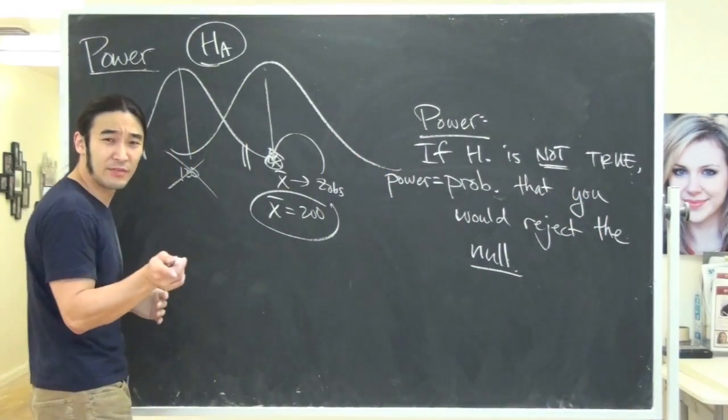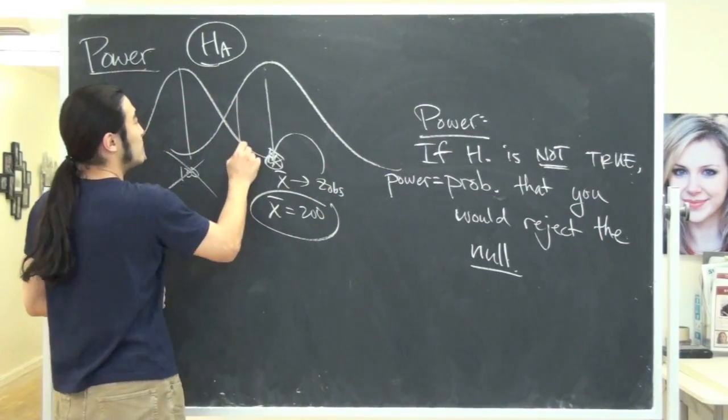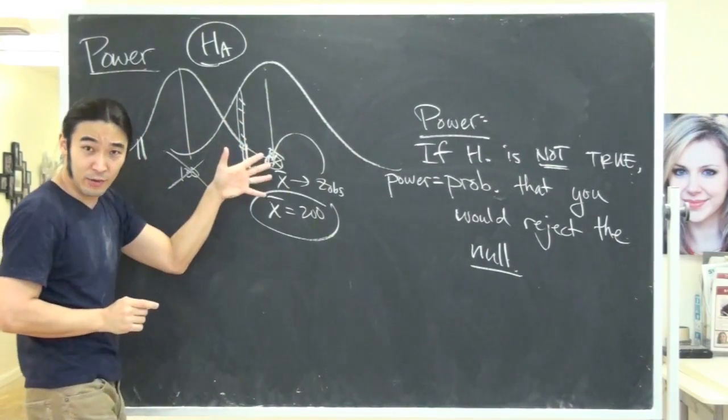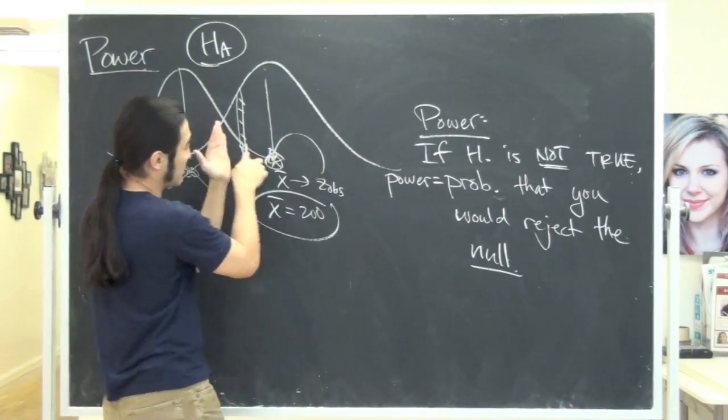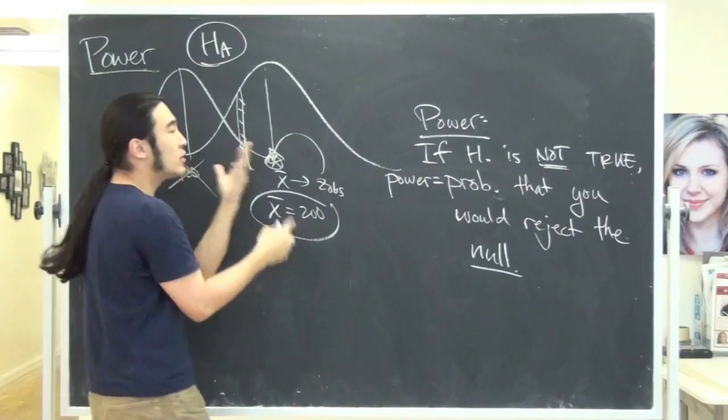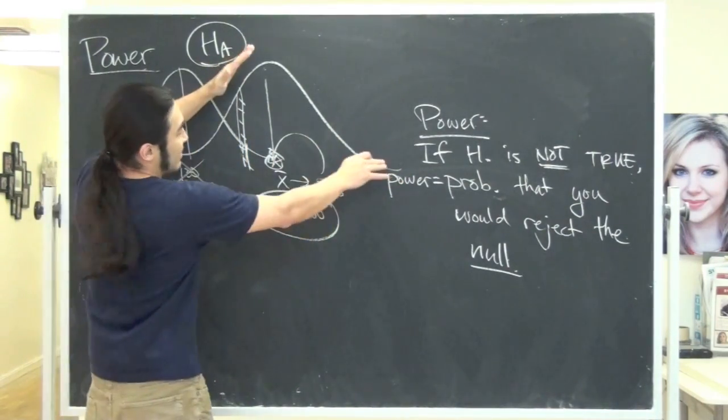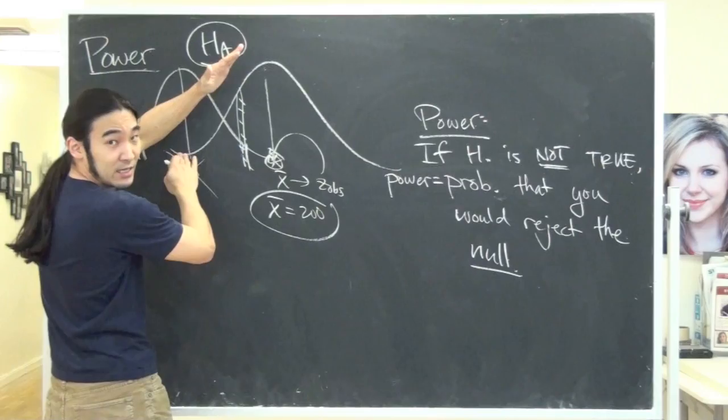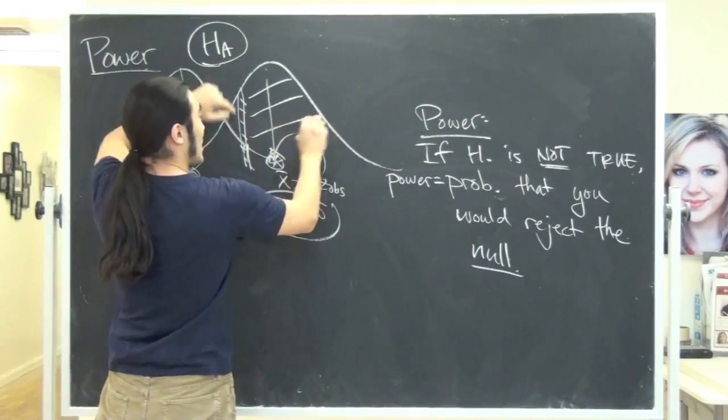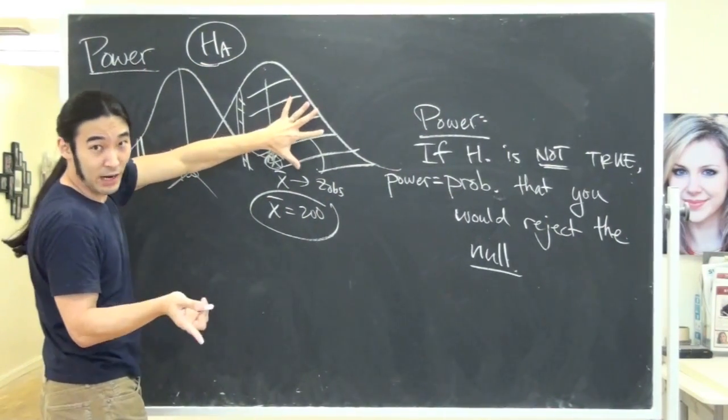So let's see that. How would you have done that? When you ran the test, you set up this critical value. And if you happened to get a sample that was to the right of this critical value, then you would have made the correct choice to reject. Well, what's the probability of that?